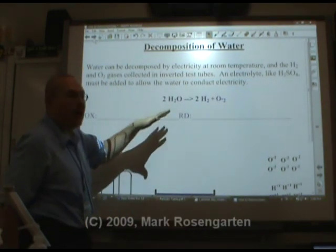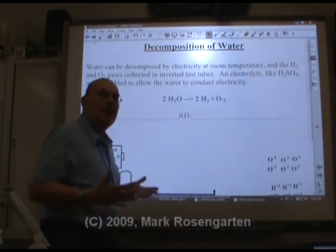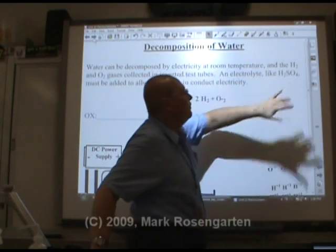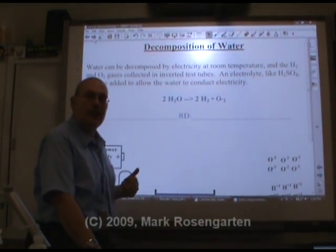You can collect the hydrogen and oxygen gas that you produce in test tubes because you can actually carry this out at room temperature. But you need to add an electrolyte like sulfuric acid, which already has hydrogen in it, in order for the water to conduct electricity.